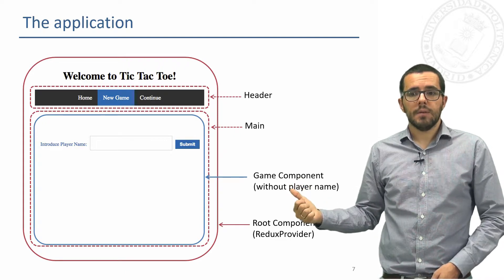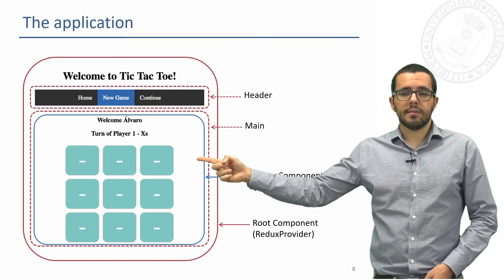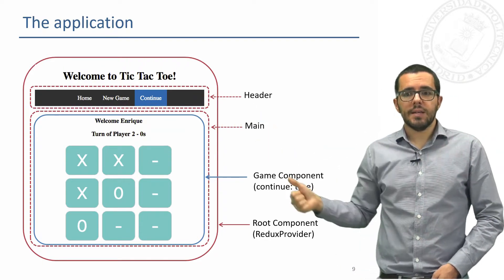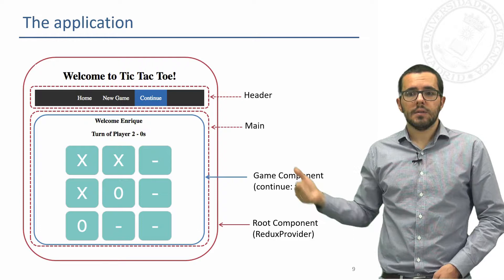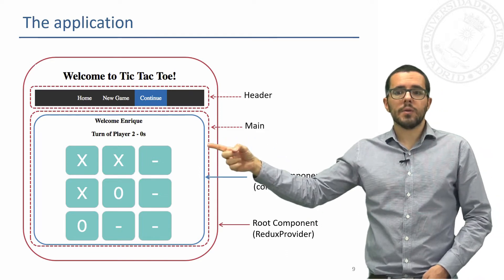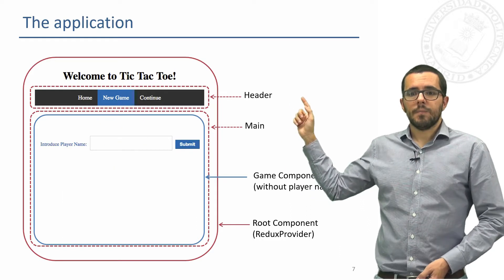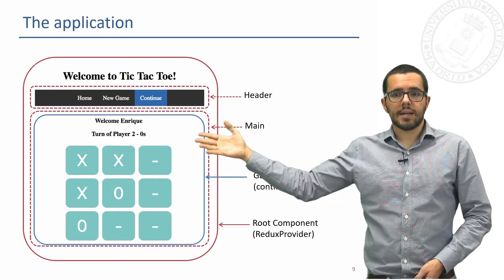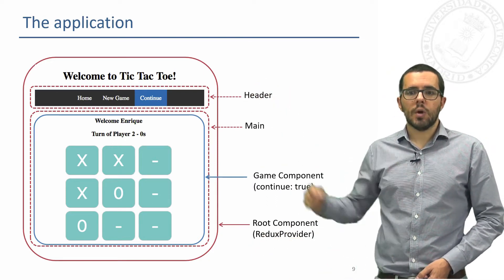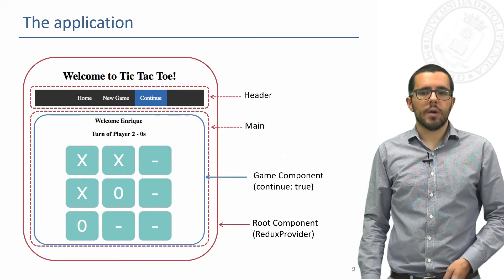This is the game component but without a player name. When the player sets the name we get the name with a hello. The main will render the game component with a continue param, and the game component will perform an AJAX call to a backend service. So we can see an input field and an AJAX call, all together with this routing possibility to choose different routes in our application.